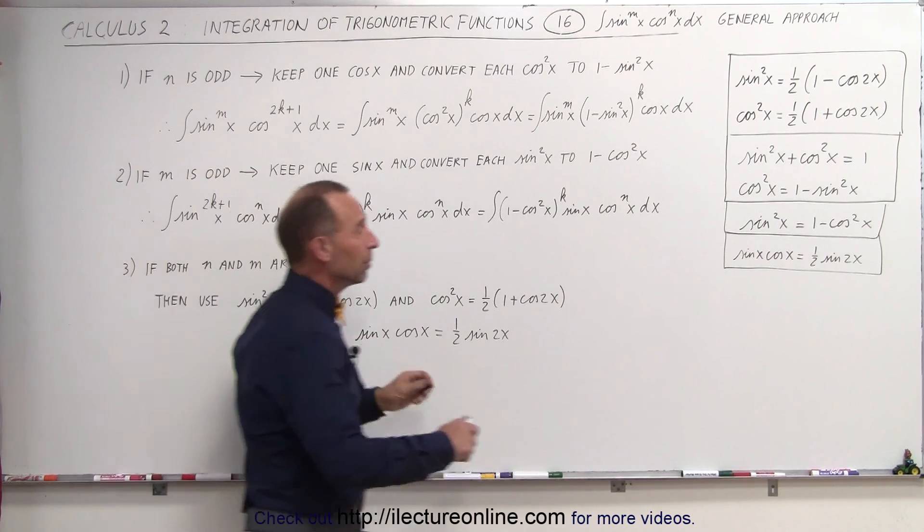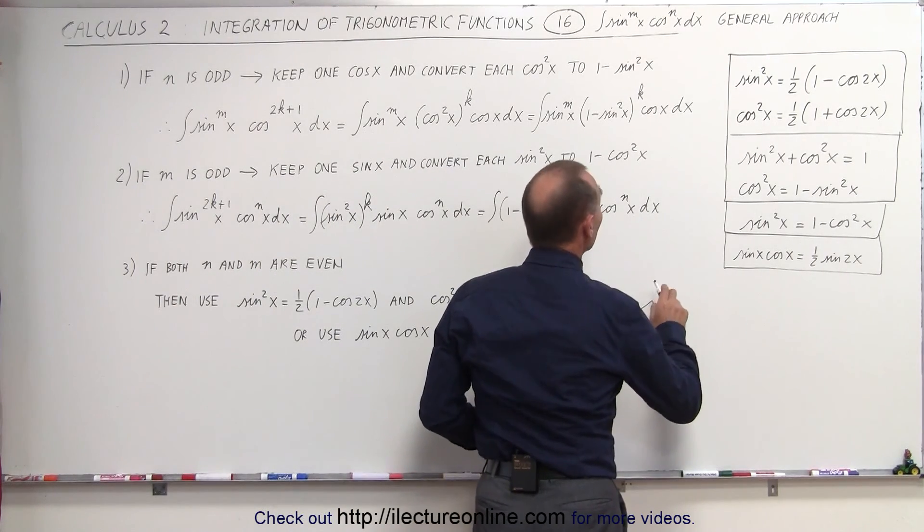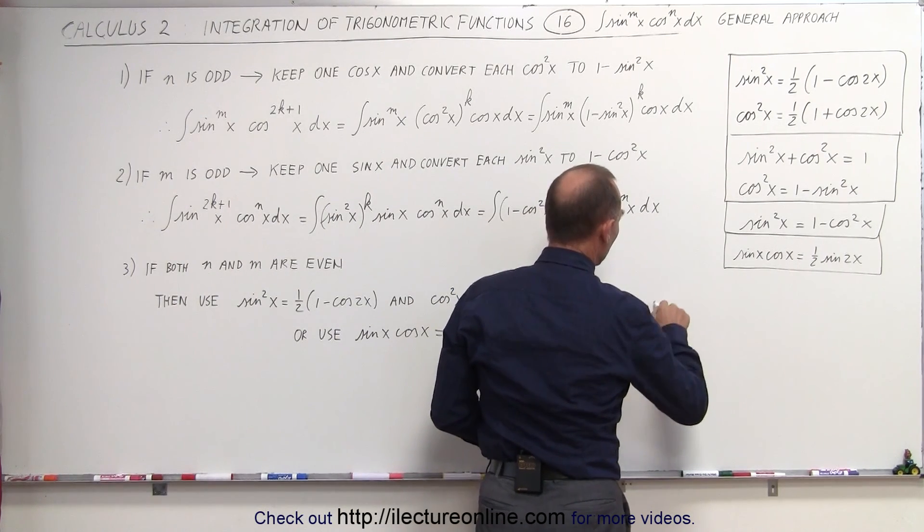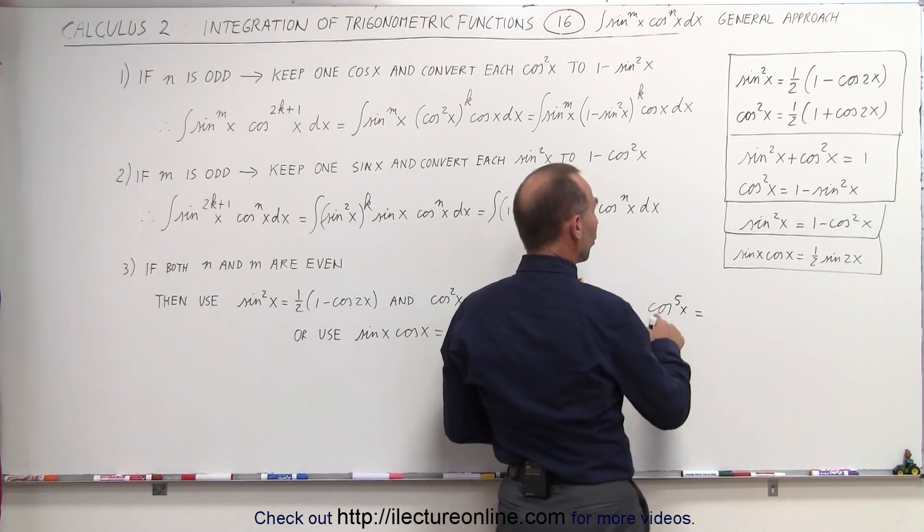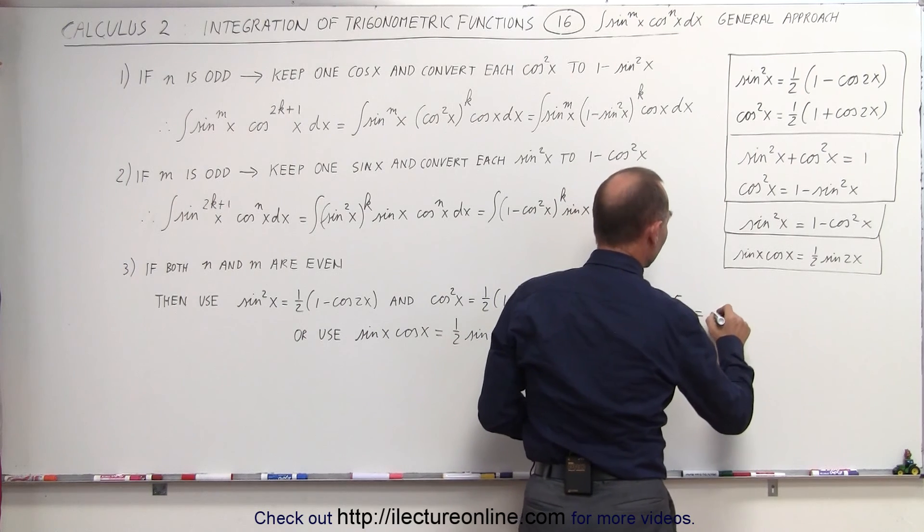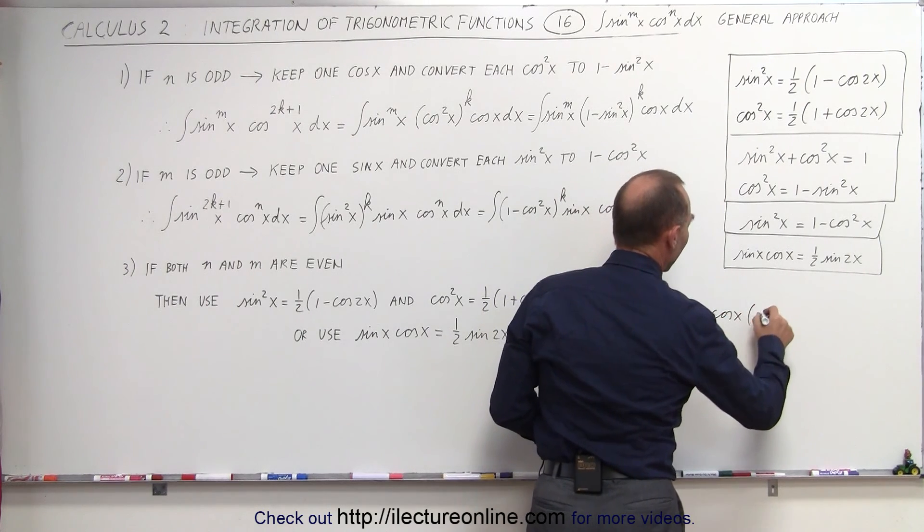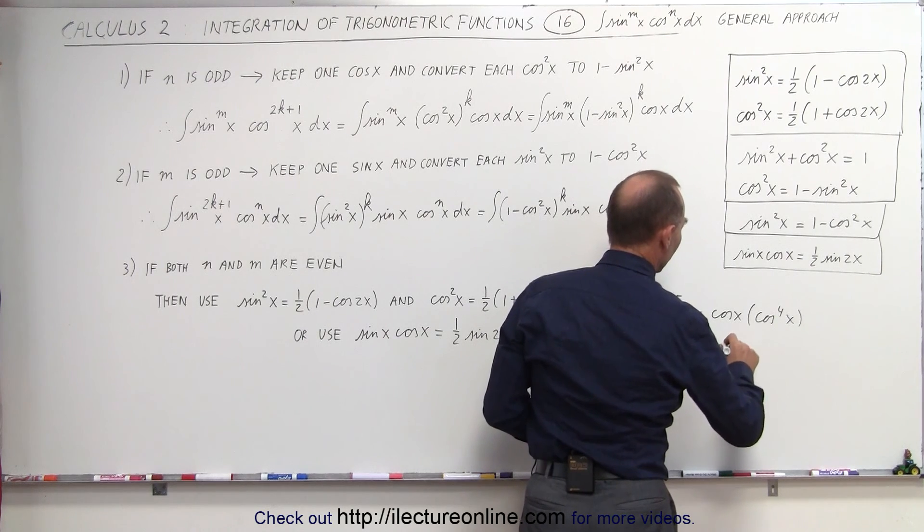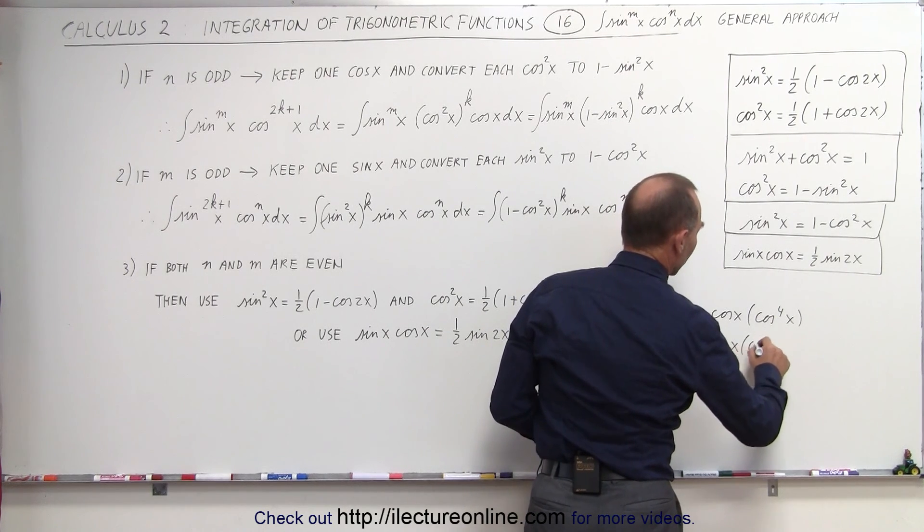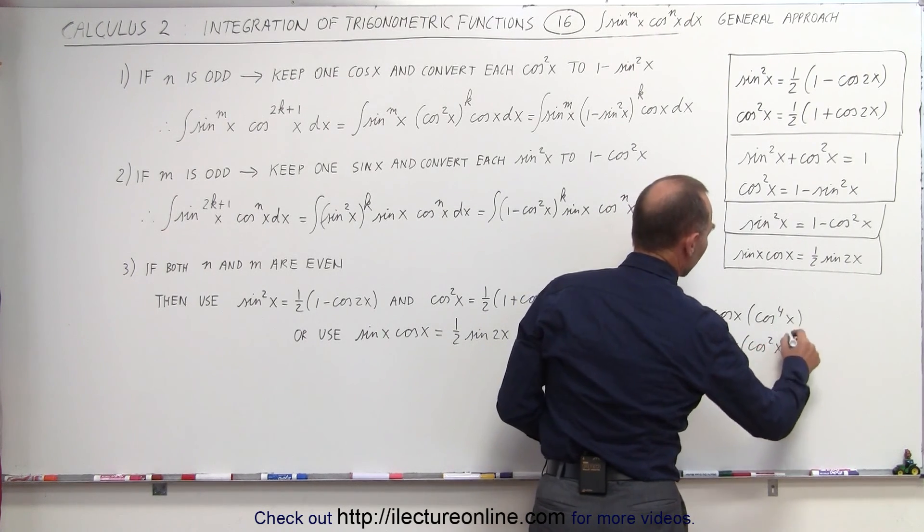So for example, let me write it down. If you have the cosine to the fifth power of x, then cos⁵x equals cos x times cos⁴x, which can then be written as cos x times (cos²x), quantity squared.